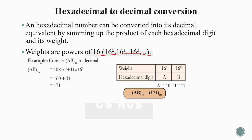Convert AB base 16 to decimal. The two digits are A and B with weights 16¹ and 16⁰ respectively. Since A = 10 and B = 11, we calculate: 10 × 16¹ + 11 × 16⁰ = 160 + 11 = 171. So hexadecimal AB equals decimal 171.